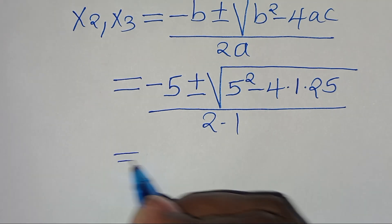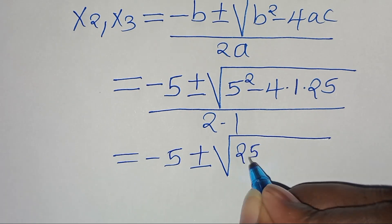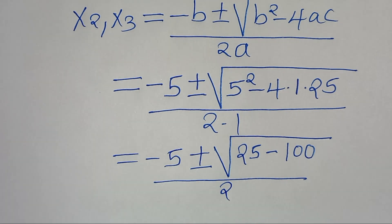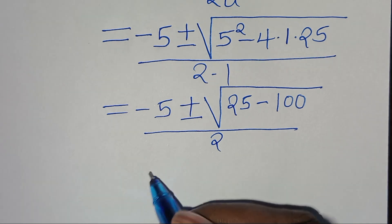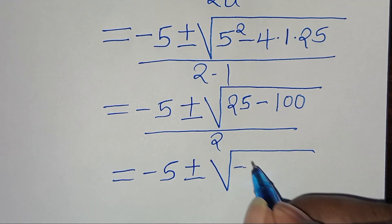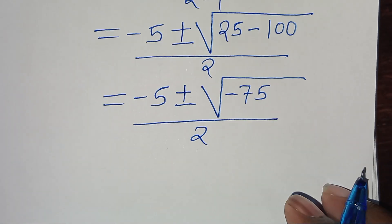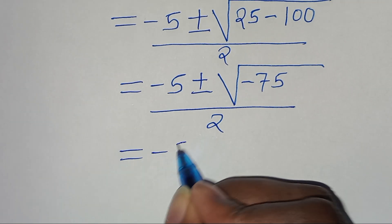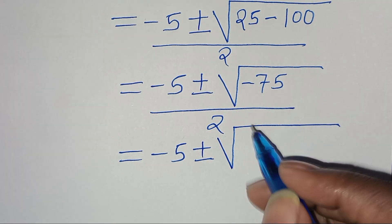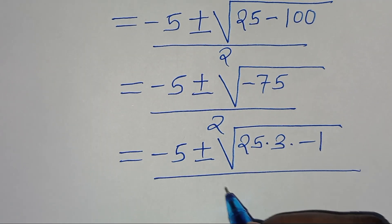Simplifying: minus 5 plus or minus the square root of 25 minus 100, divided by 2. That gives minus 5 plus or minus the square root of minus 75, divided by 2. We can express the square root of minus 75 as the square root of 25 times 3 times minus 1, divided by 2.